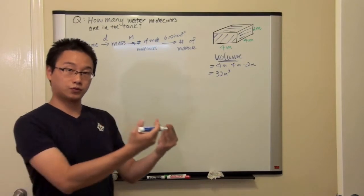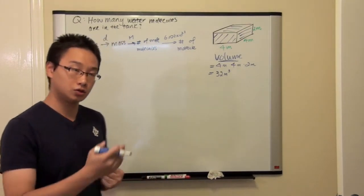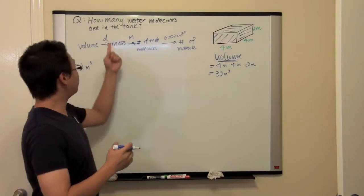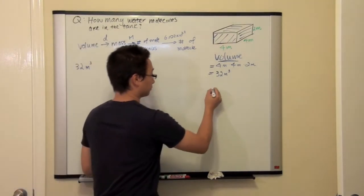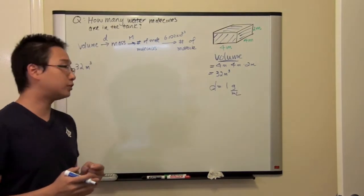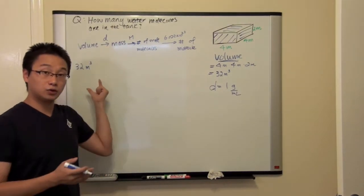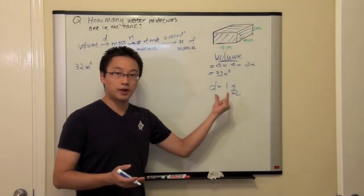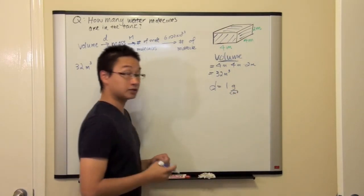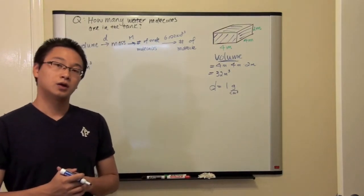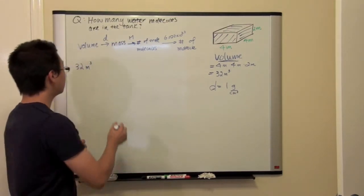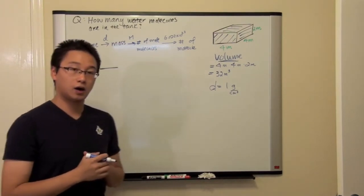You may use this method to guide you through the thinking before you start the calculation. So, we have the volume. The density of water is 1 gram per milliliter. Now here we see a problem — we have the volume in units of cubic meters, but in the density, we have units of milliliters, or equivalently cubic centimeters. They are both equivalent to each other. So how are we going to handle that? First, we have to change units so they can communicate — we have to change cubic meters to cubic centimeters.